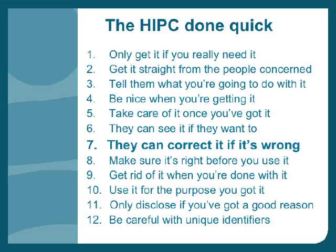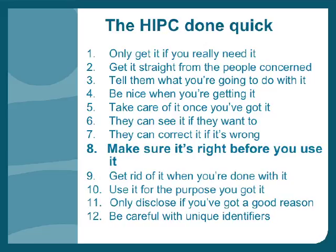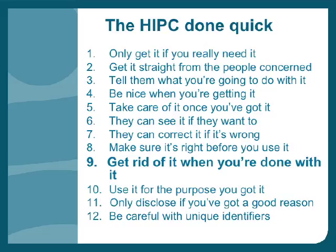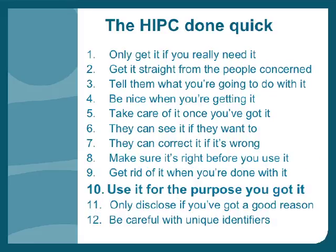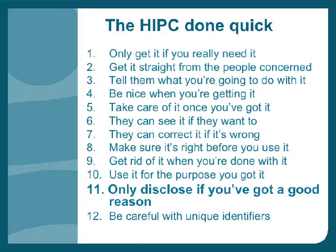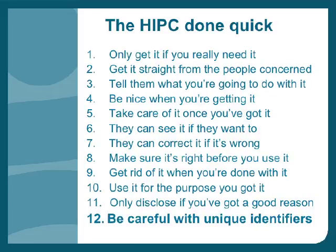When it comes to actually using the information you hold, another set of obligations attach. You've got to make sure it's accurate, up-to-date, complete, relevant, and not misleading before you use it. You've got to get rid of it when you're done to avoid having old, irrelevant, and potentially damaging information lying around. You've got to use it for the purpose for which you obtained it, and only disclose it where disclosure is one of the purposes for which you collected it or where there's some other legal justification. Rule 12, dealing with unique identifiers and the National Health Index number, doesn't quite fit that scheme, so I'll talk about it at the end.